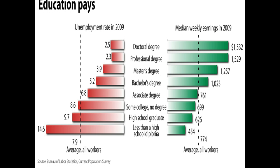Let's take a look at some of those numbers from the Current Population Survey from the Bureau of Labor Statistics, 2009. Looking at median weekly earnings: if you drop out of high school, you're going to earn about $454 a week. If you have your bachelor's degree, you're earning double that — $1,025 a week on average. A doctoral degree earns even more at $1,532. Education does pay. Additionally, with less than a high school diploma the 2009 unemployment rate was almost 15%, while with a bachelor's degree it was only 5.2%. So you're much more likely to find a job and earn more with an education.